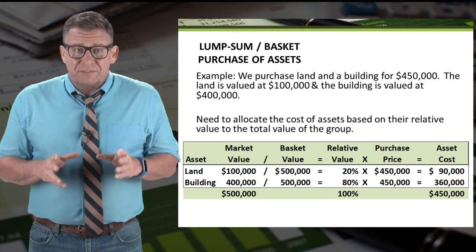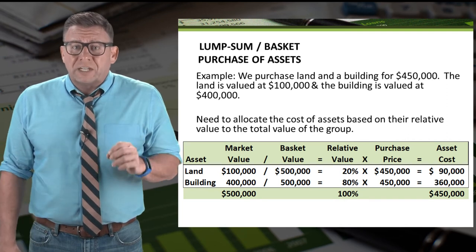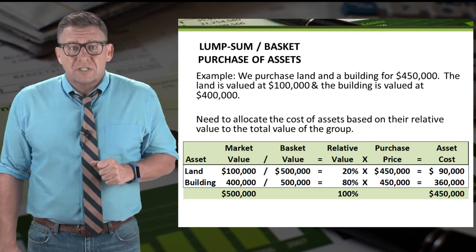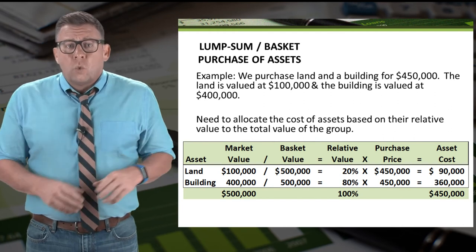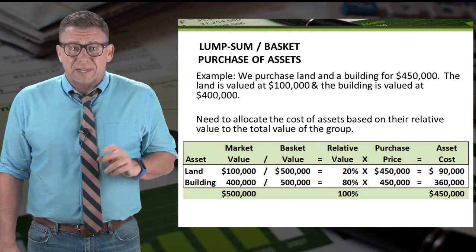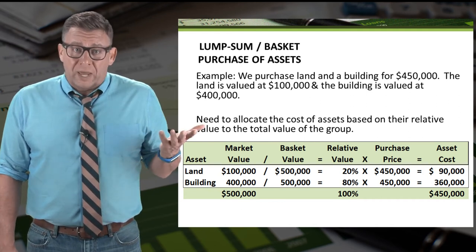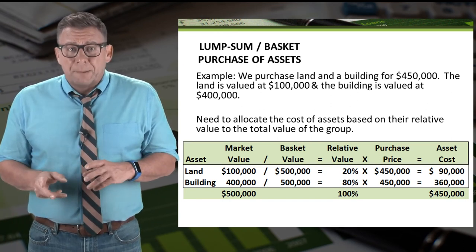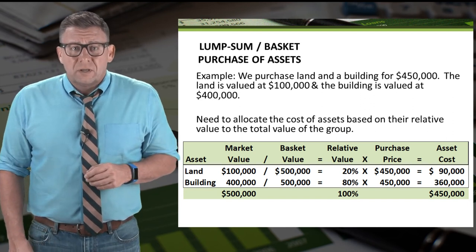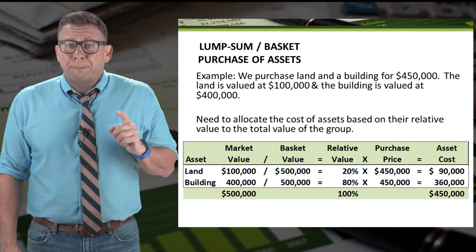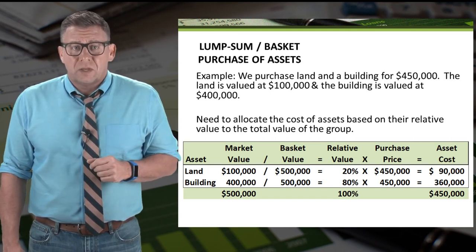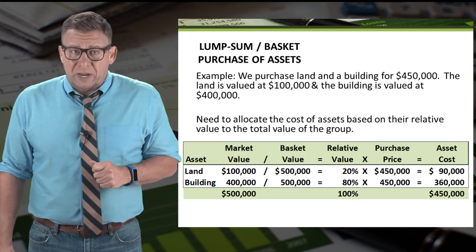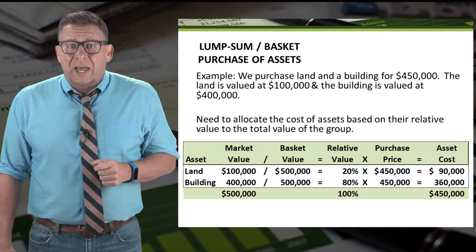So we need to allocate the purchase price of the assets, and we do this based on their relative value to the total value of the group. You might want to pause the video and write down this table in your notes. We start by listing the fair market value of the assets in the group and then summing the total value of the group — in this case, $500,000. We then divide the fair market value of each asset by the fair market value of the group: land is 20% of the total and building is 80% of the total. Finally, we multiply the relative percentages by the purchase price to determine how much of the purchase price should be allocated to land and how much to building.